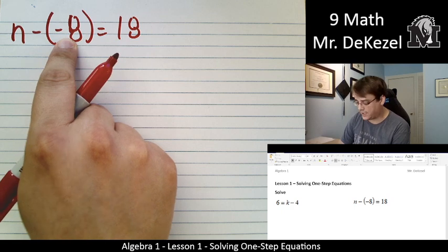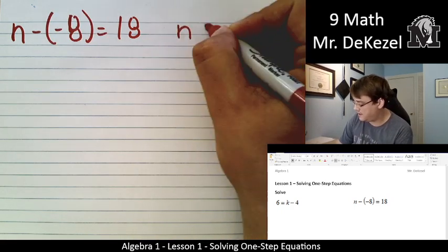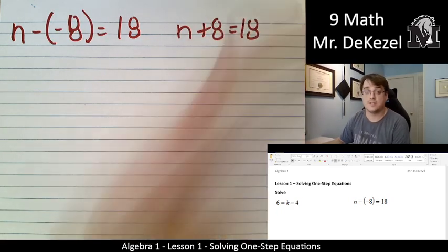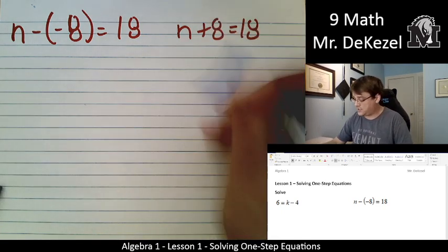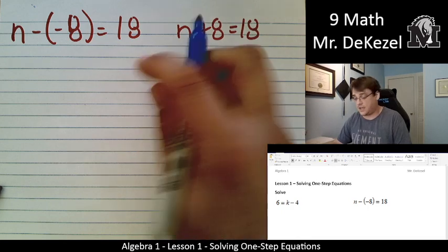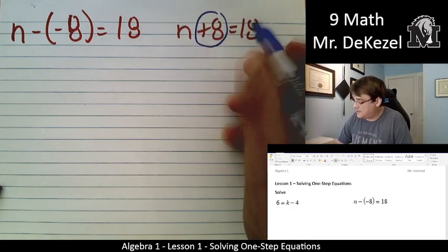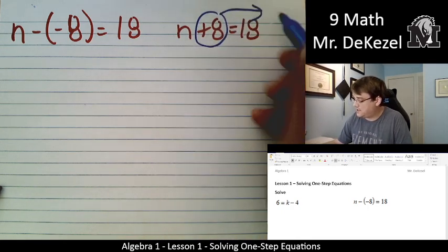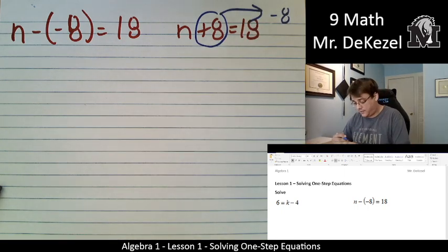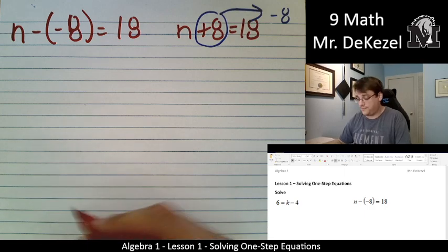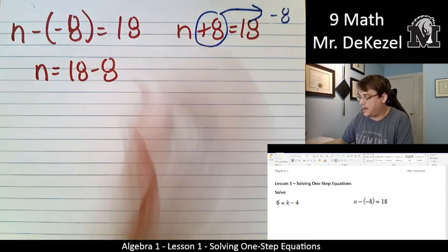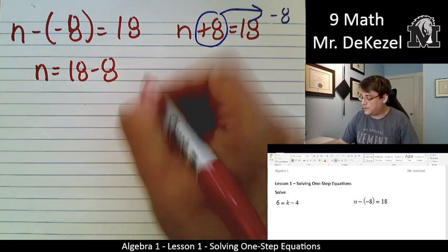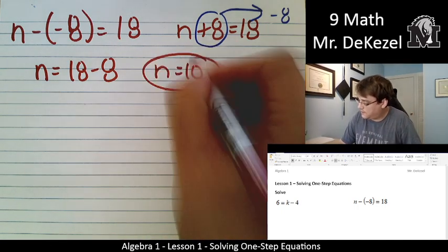So I can rewrite this as n plus 8 equals 18. And when I am moving that across the equal sign to get n all by itself, I'm going to take this and put it on the other side, and it's going to become negative 8. When I flip it, when I move it across the equal sign, it changes its sign. We're left with n is equal to 18 minus 8. n is equal to 10.